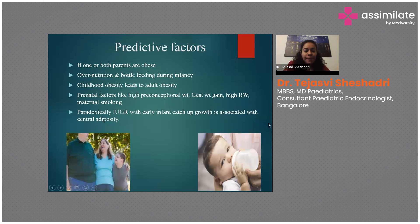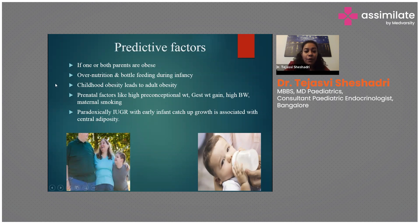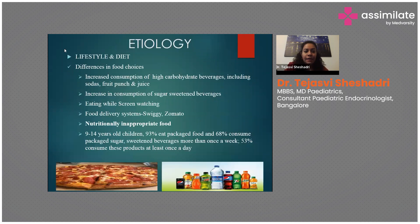Predictive factors include having one or both obese parents, overnutrition or bottle feeding during infancy, and childhood obesity commonly carrying into adulthood. Prenatal factors include higher maternal gestational weight gain, higher birth weight, and maternal smoking. Paradoxically, IUGR babies born with lower birth weight who experience very high infant catch-up growth in the first two years are at high risk of metabolic syndrome and obesity complications.